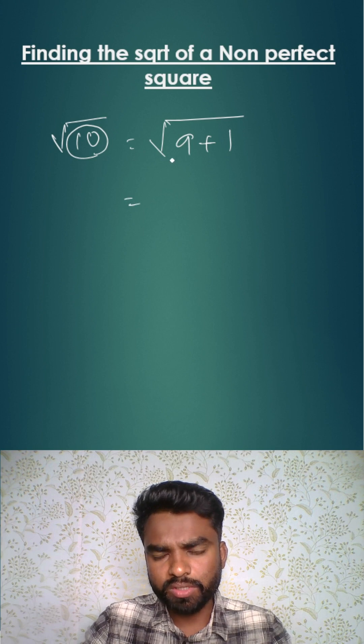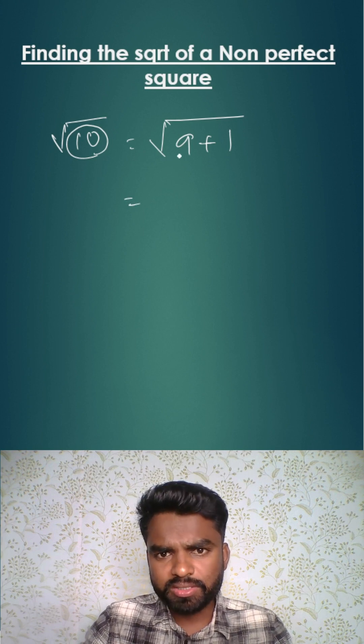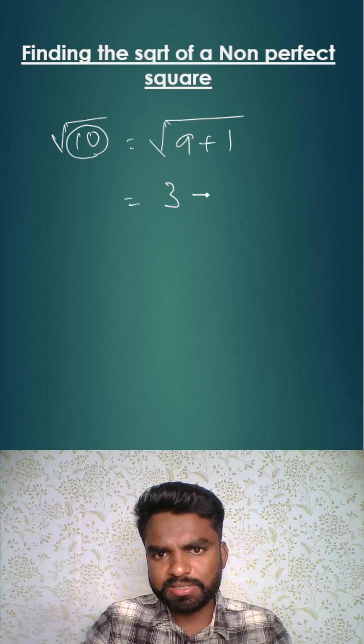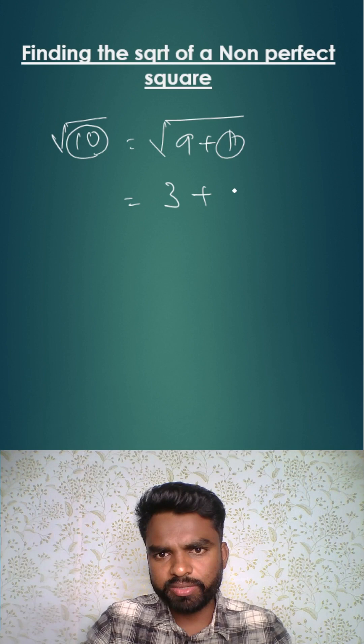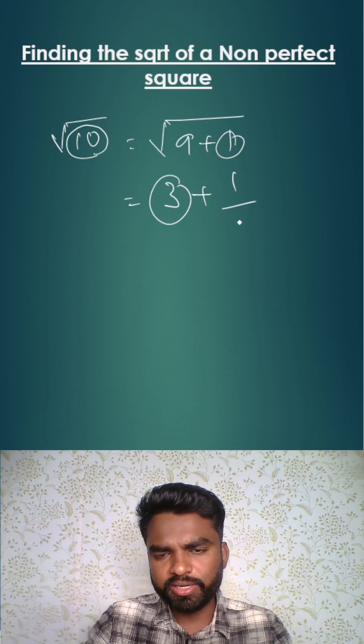As you already know, in the next step you'll be writing square root of 9. What is square root of 9? It's 3. You have plus here, so you'll be writing plus here. Then you'll be writing the fraction containing numerator as 1 divided by twice of this number as denominator, 3 times 2 is 6.